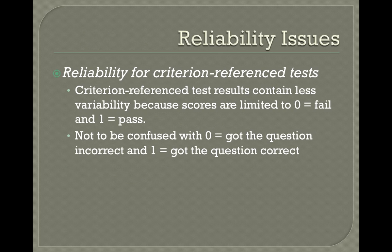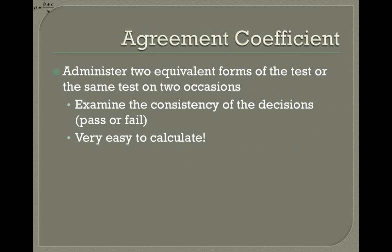Reliability issues change drastically when we move from a norm-referenced test to a criterion-referenced test. In fact, all the things we've talked about so far have been relative to a norm-referenced test — Cronbach's alpha and these different things are norm-referenced. Criterion-referenced test results contain less variability because the scores are limited to fail and pass, not to be confused with item analysis where a student got a question correct or incorrect. I'm going to go through a pretty thorough but simple example that I think will make it a little clearer.